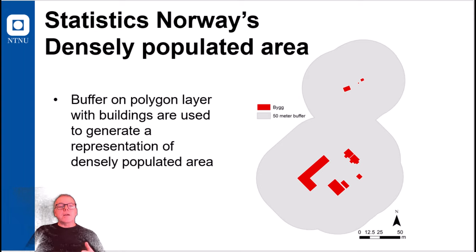Another dataset that is generated based on buffer operation is Statistics Norway's dataset of densely populated areas. And a little bit of simplification, but the basic tool here is that they have used a 50 meter buffer from all buildings in Norway. So wherever people live or where they work represents a densely populated area, because these polygons are fused together.